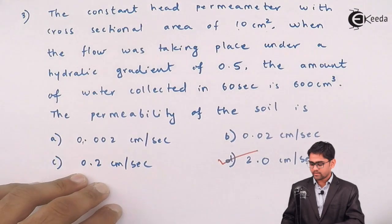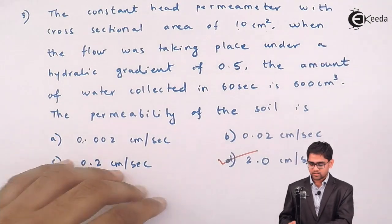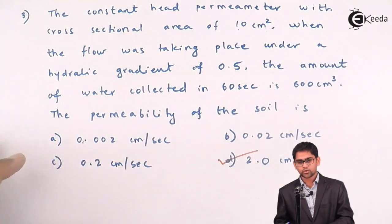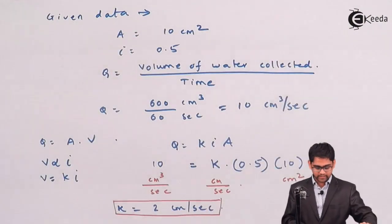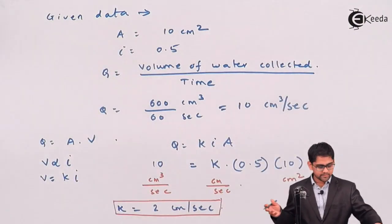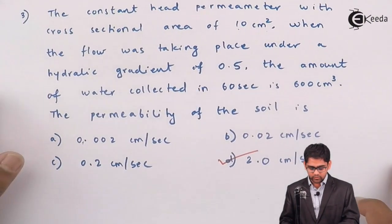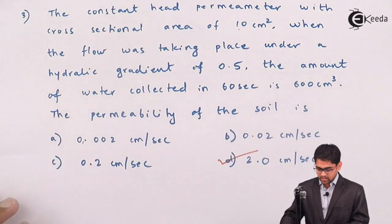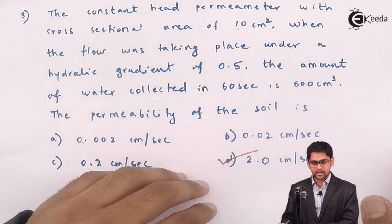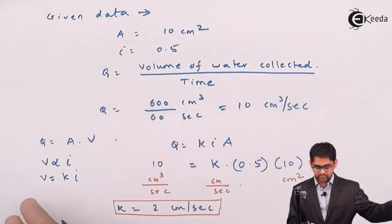But here, however, in the problem, here there is, I think, no need to go and check it for the Reynolds value. And obviously, if you want to check it for the Reynolds value, the flow is obviously to be laminar. And therefore, the Darcy's law will be valid, which is nothing but velocity of the flow is directly proportional to hydraulic gradient.